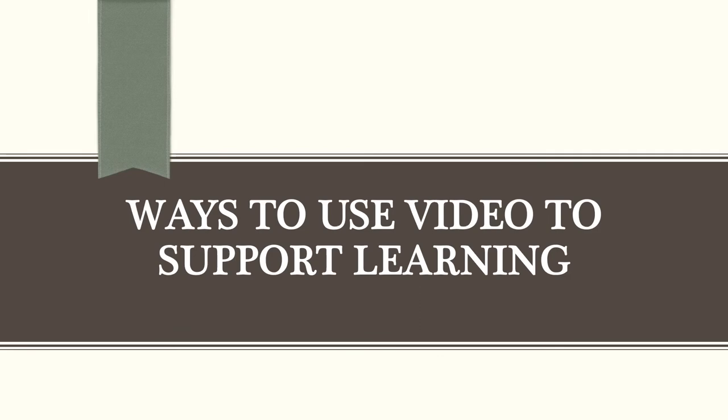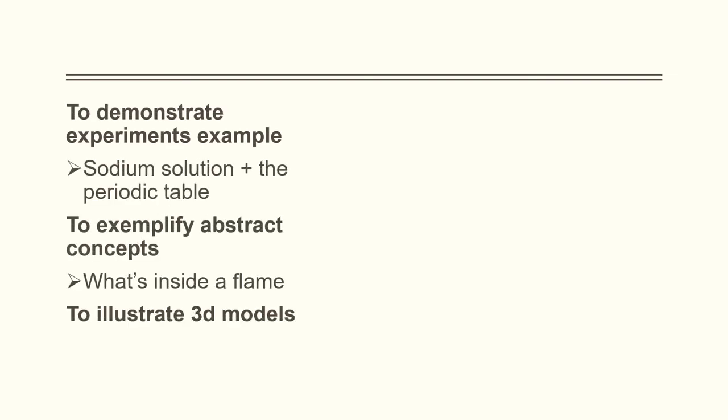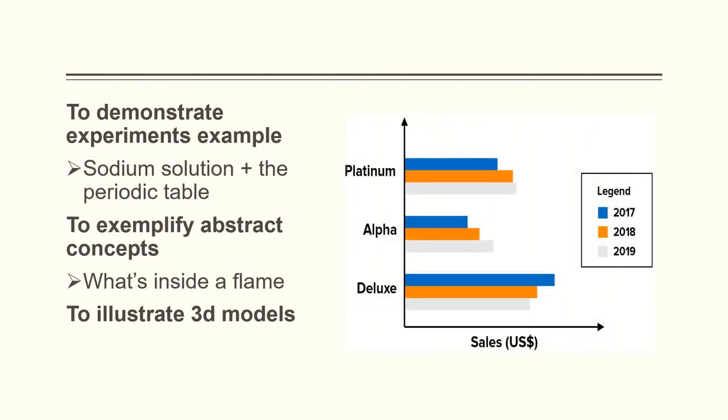The ways to use video to support learning include: to demonstrate experiments, such as soldiers of soldiers with the periodic table; to exemplify abstract concepts, such as what is inside a flame; and to illustrate 3D models. Some video materials can be used like an experiment to compare things and properly explain them, such as a picture of cells.